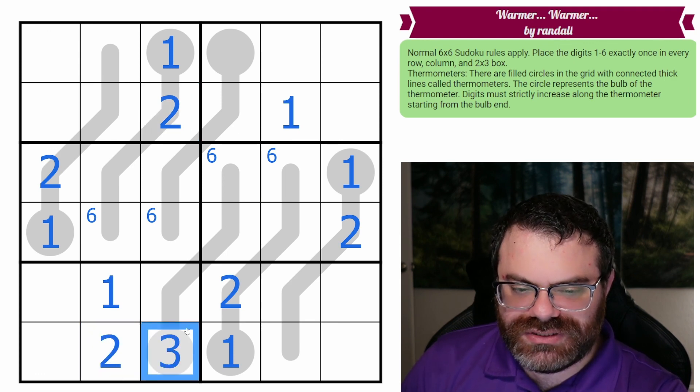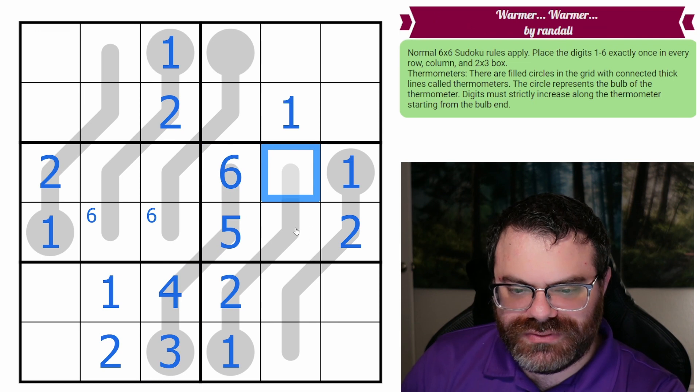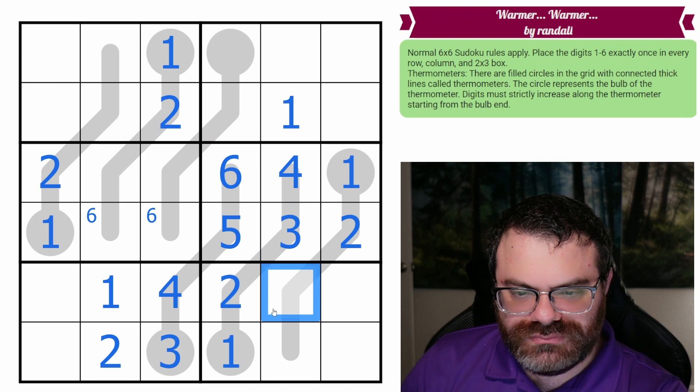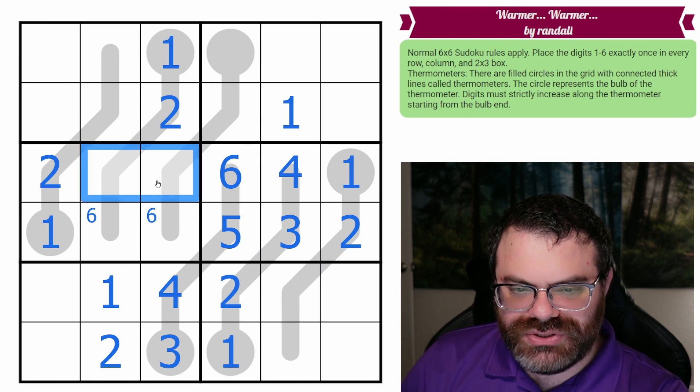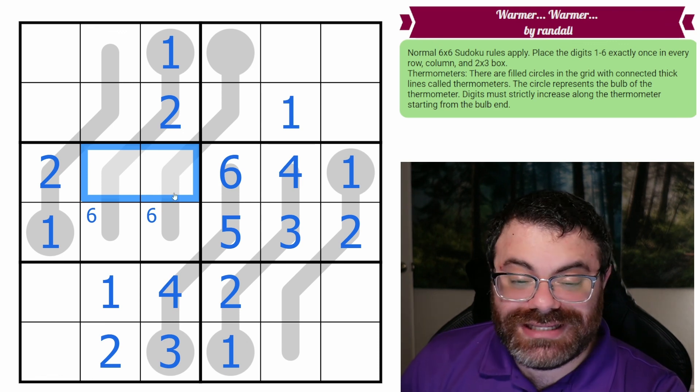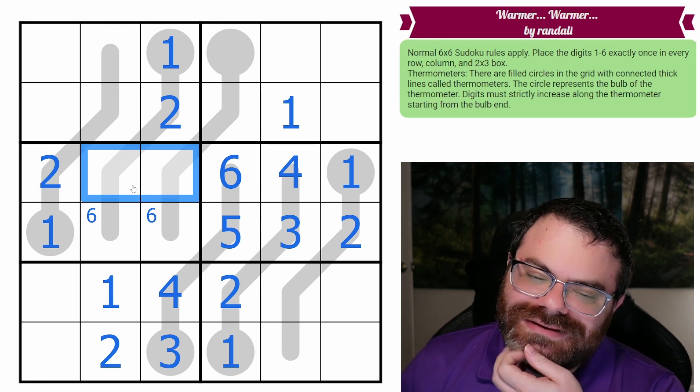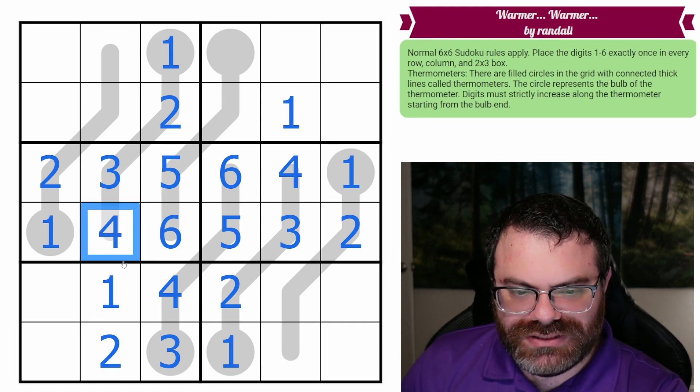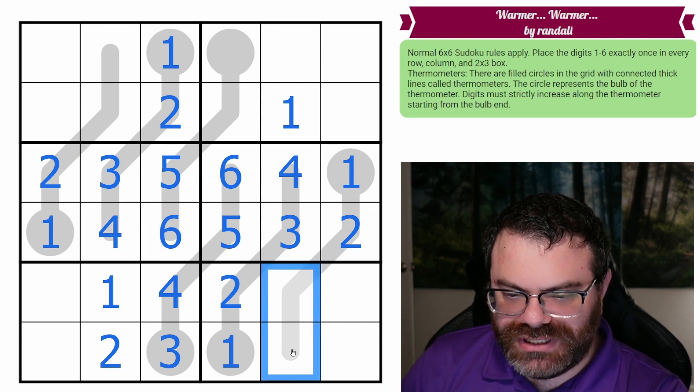Now this thermo forces three, four, five, six. That's the only way it can work. And then we need three and four here, and we know the order because of the thermo. Up here, we need a two and a three. No, sorry. I was going to say, that's bad. No, we need a three and a five. And this three looks up. So that's the three, that's the five. Five is followed by six. This is a four. This is cleaning up very nicely.